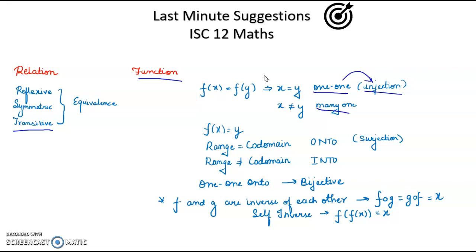Coming to onto, if range equals co-domain, then it is onto, also known as surjection. If it's not equal, then it is into function. When one-one and onto are combined, then it's a bijective function, known as bijection.